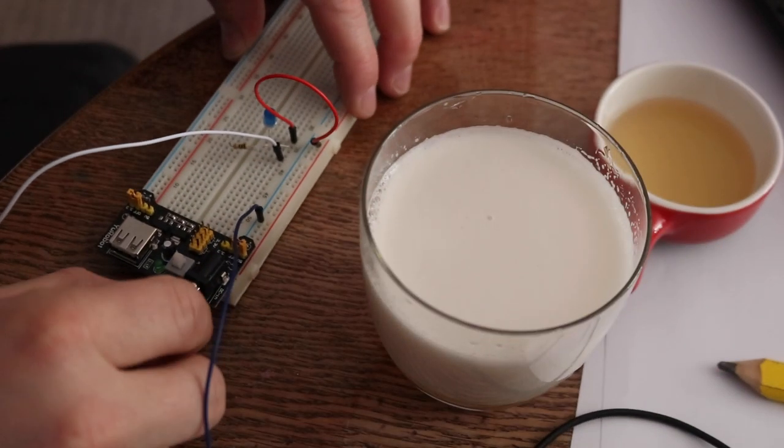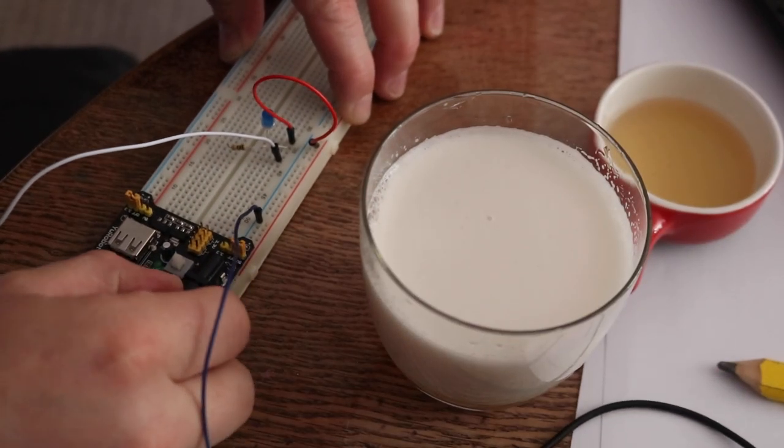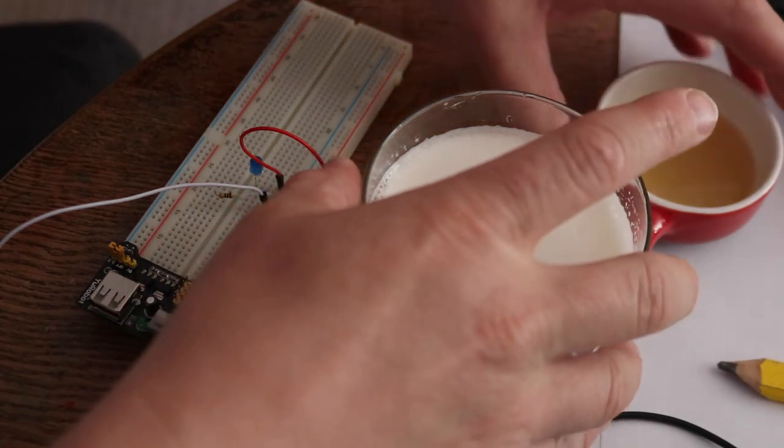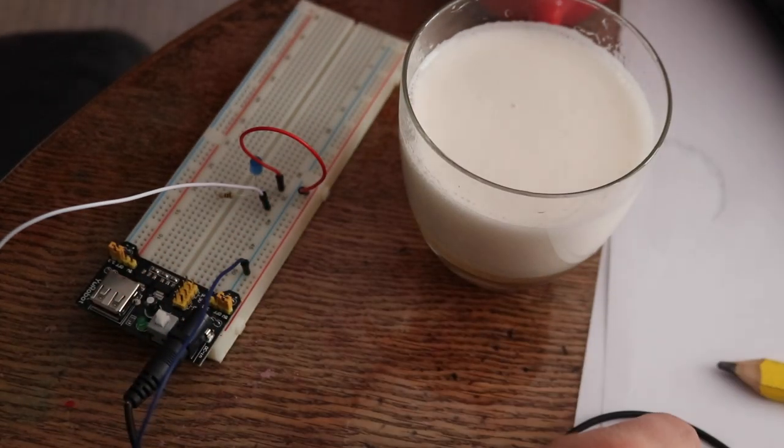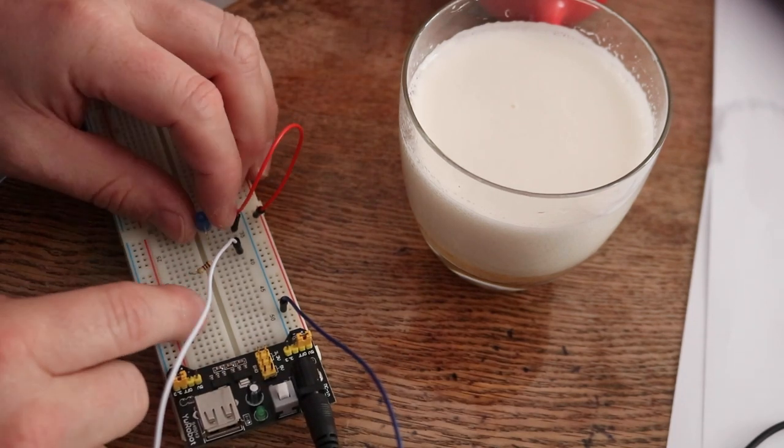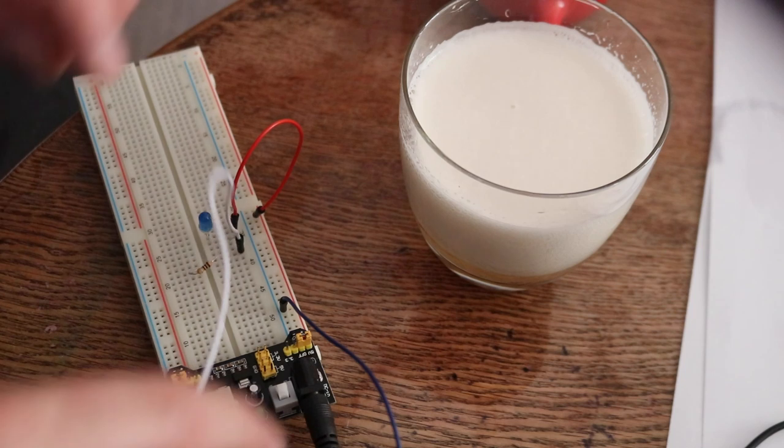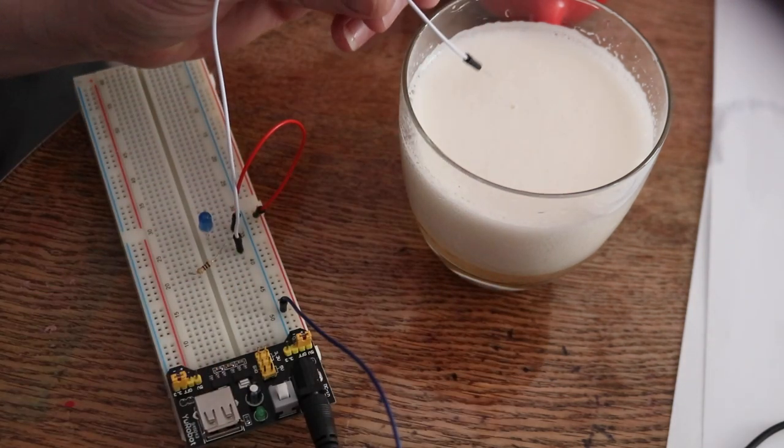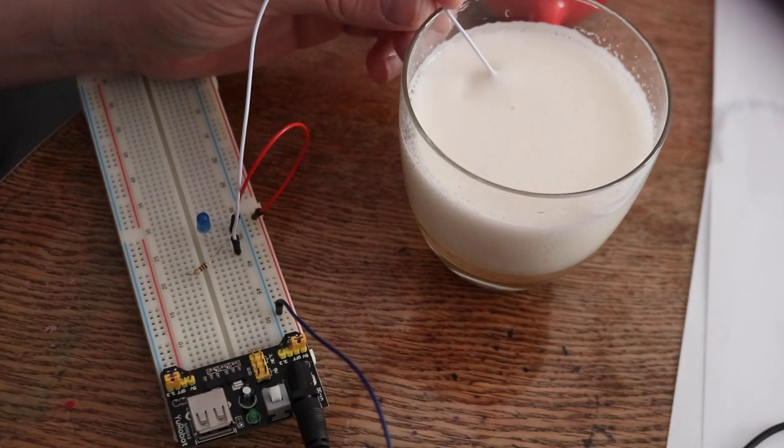So here we have just a little experiment folks to figure out how we can design a sensor for the can filling machine. I've got a 3 volt supply down here and a resistor with an LED and a cable which I'm going to pop into this foam on this beer.